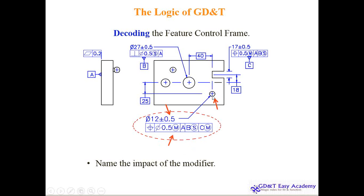The impact of the modifier: in the case of a hole, the size will be reduced; in the case of a shaft, the size will be enlarged. MMC here reduces the size because the smaller the hole, the heavier it will weigh — that means maximum material condition.